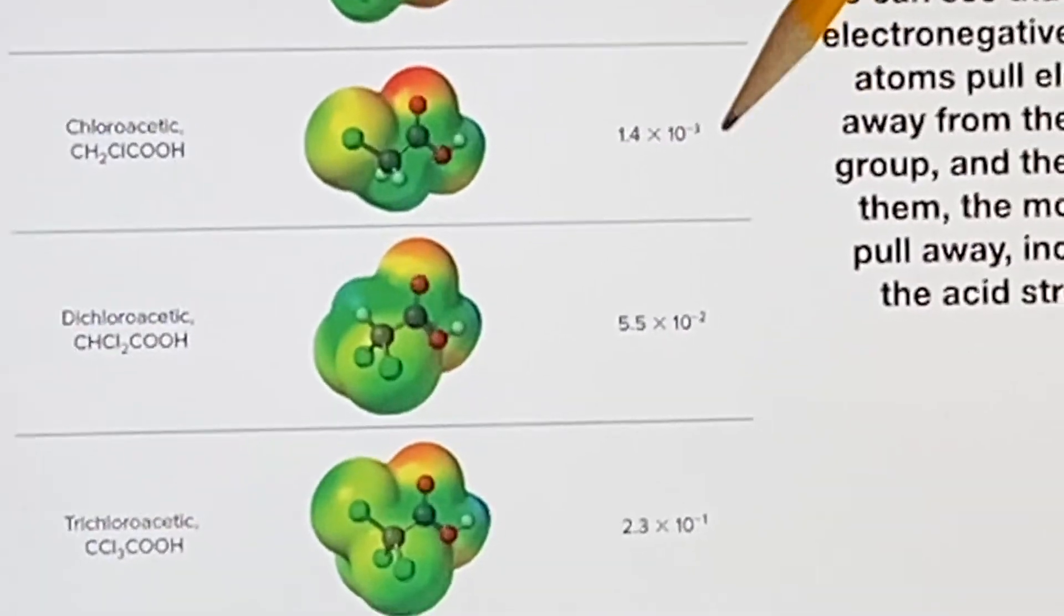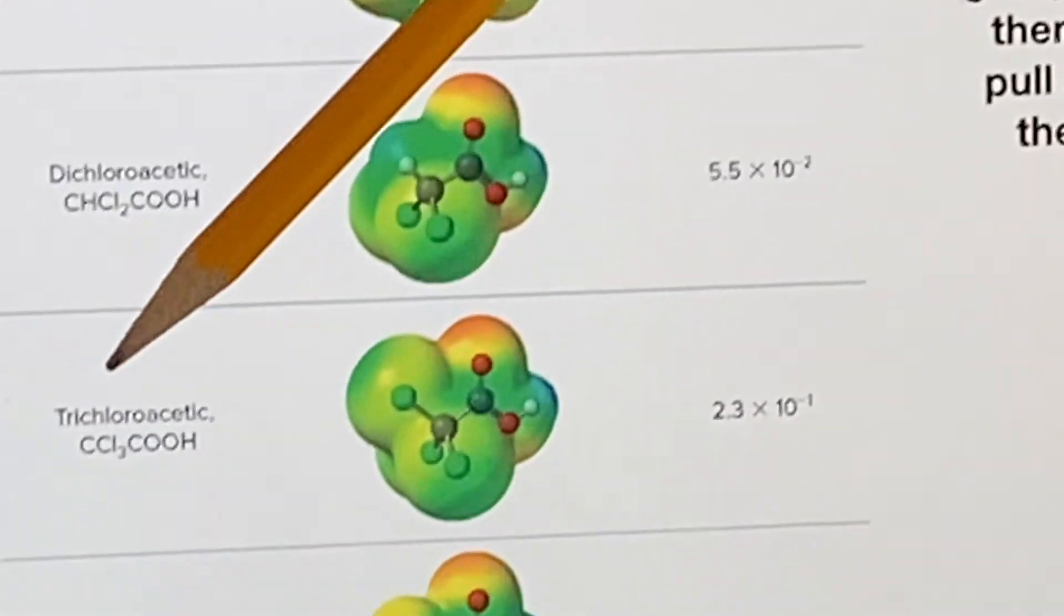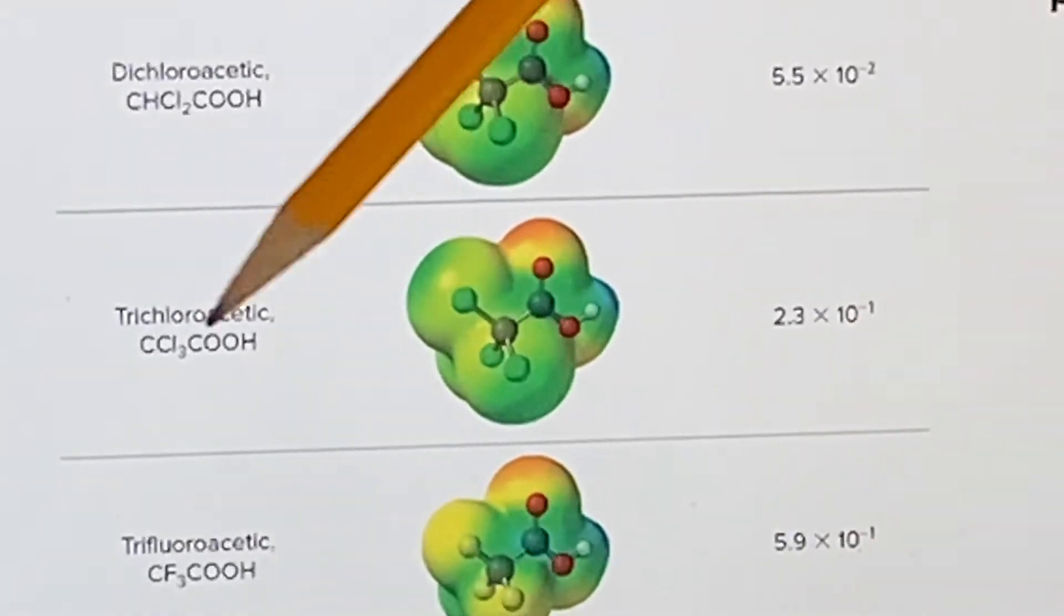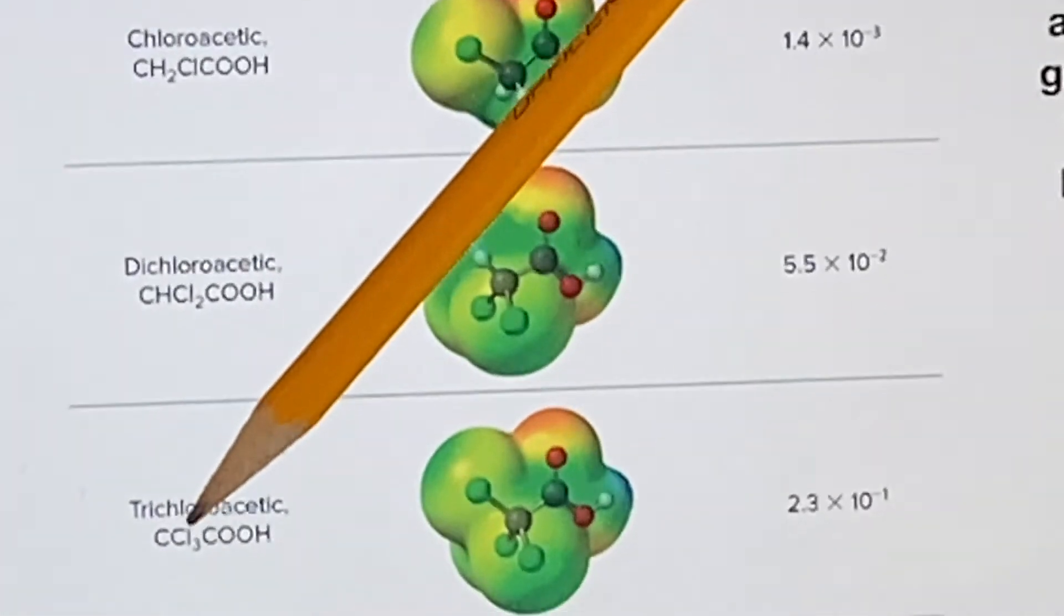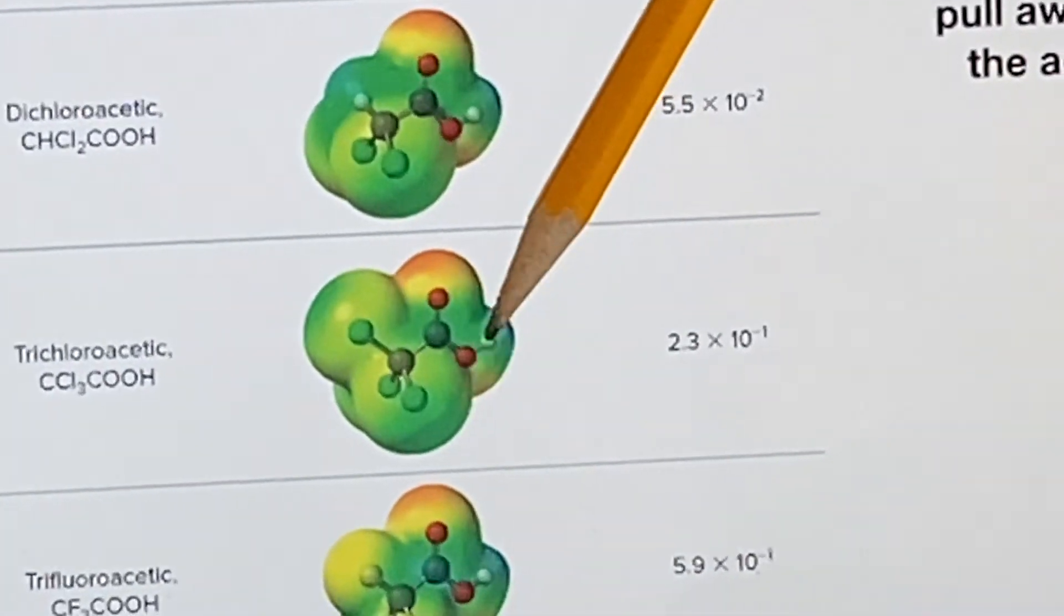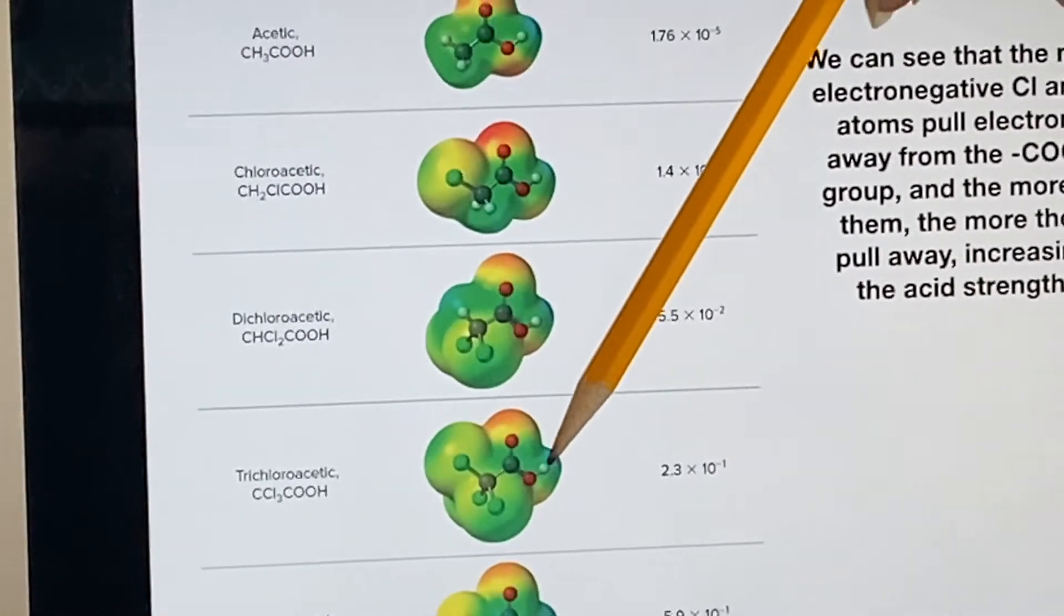And trichloroacetic—okay, we have now replaced all three of those hydrogens with chlorine atoms, and they're all pulling electron density away from this area, and it's gotten even stronger.